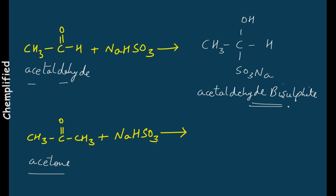The second one is with a ketone. When you treat NaHSO3 with a ketone, in place of this hydrogen you will write CH3, and SO3Na will be there as it is. So this will be your acetone bisulfite.